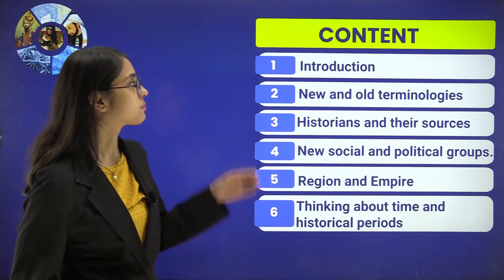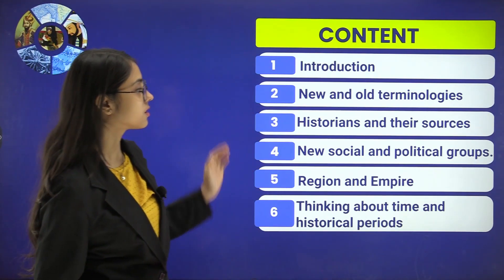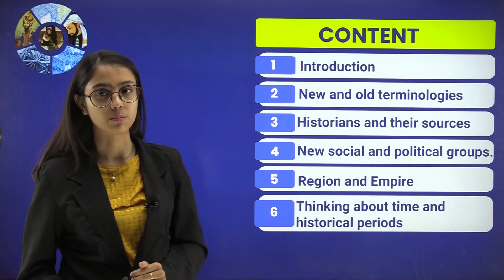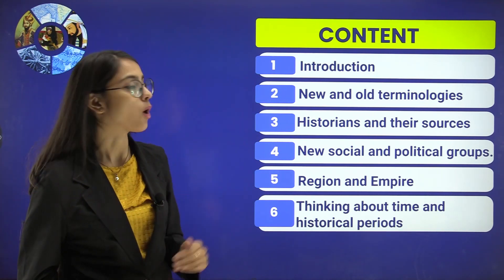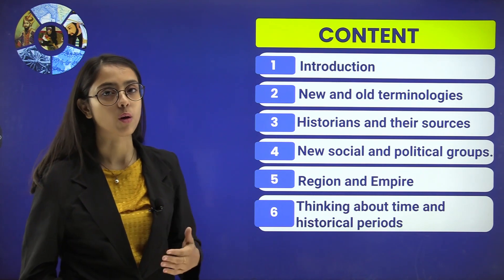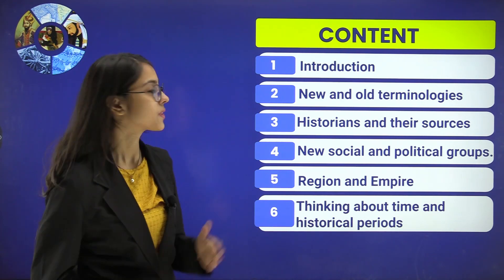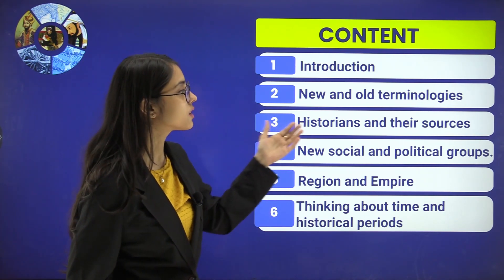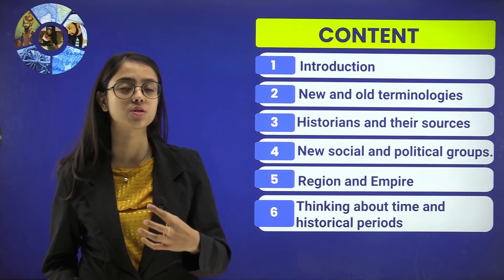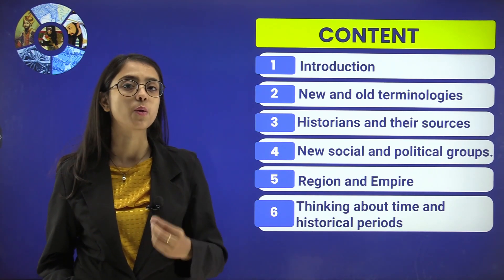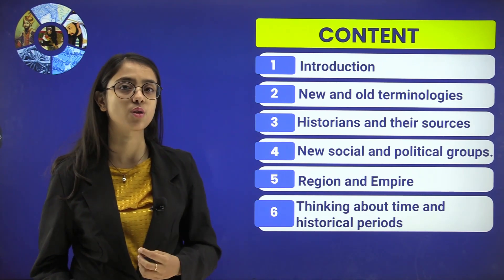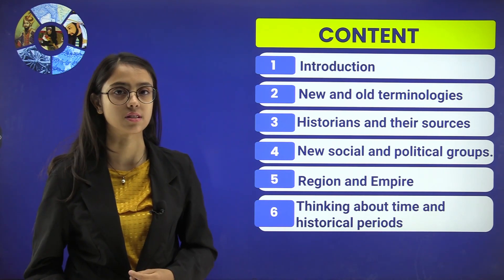In this chapter we are going to learn the following. We will see an introduction to this chapter, how new and old terminologies were formed and what those terminologies are. Then historians and their sources — who were historians and what are their sources that provide us with evidence of the existence of life in the Indian subcontinent.